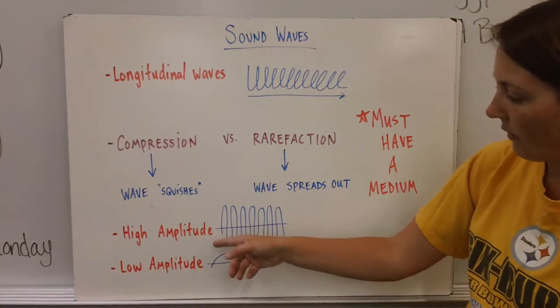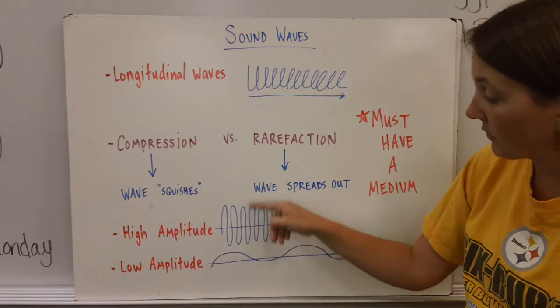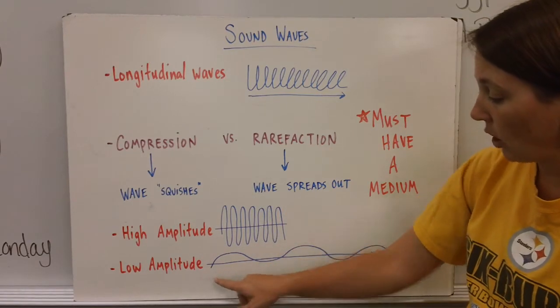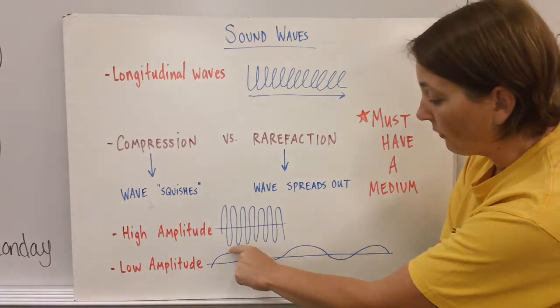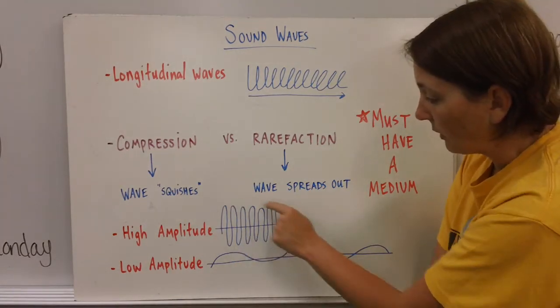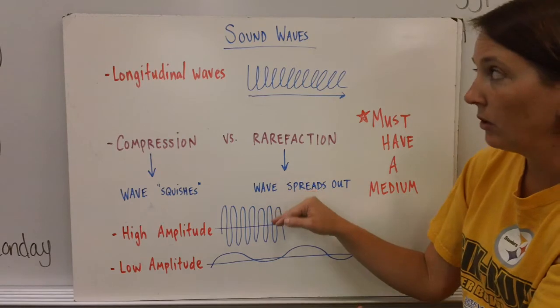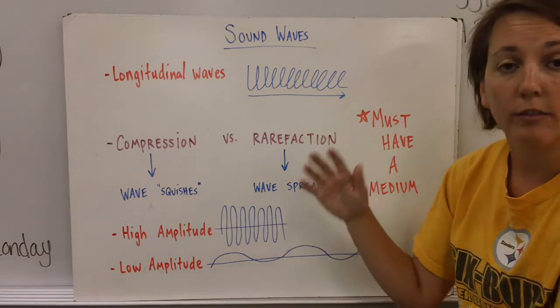With sound waves you can have a very high amplitude, which means the wave is very tall. Or you can have low amplitude waves, which means the wave is sort of spread out. Notice the wavelength increases between these two sets of waves as well. The higher the amplitude of a sound wave, the higher the volume.